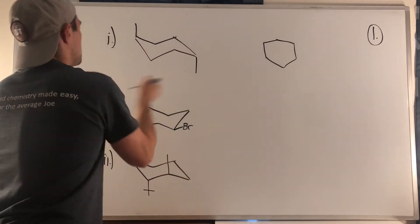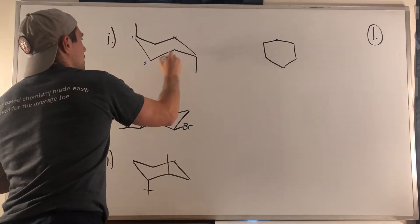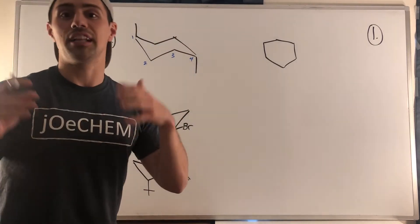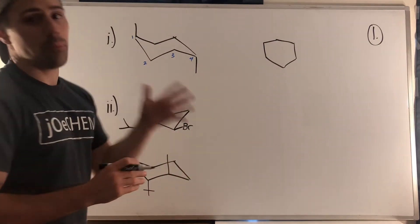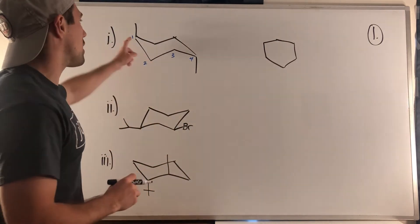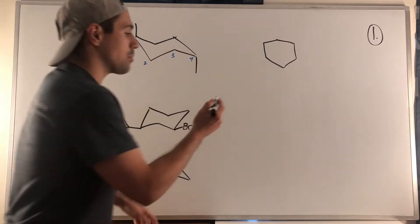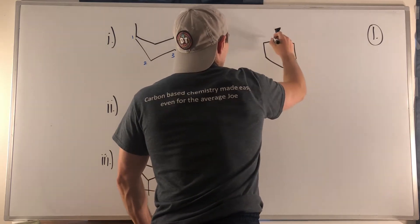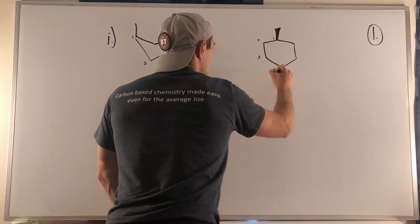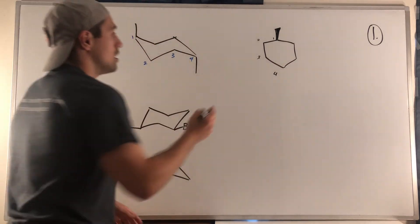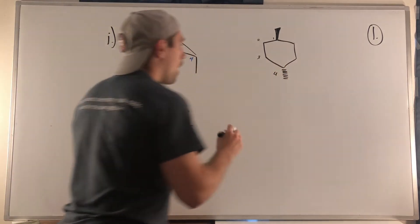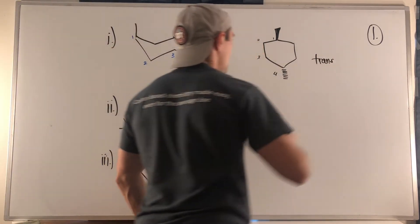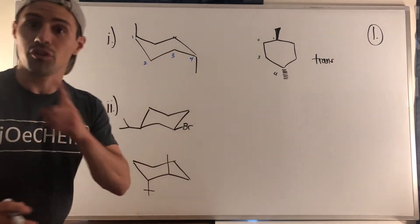It helps to number where the substituents are. We have an ethyl group at position one and an ethyl group at position four, and we can see they're on different sides of the ring. Remember, up is always up and down is always down — in this case, up axial and down axial. Position one needs a wedge going up, and position four needs a dash going down. These two groups on opposite sides of the ring are called trans to each other.